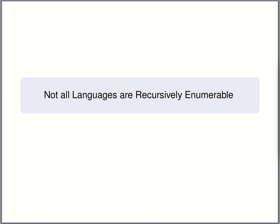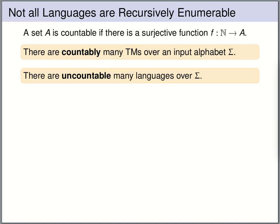Turing machines are as powerful as it gets, so it is natural to ask whether every language can be computed by a Turing machine. The answer is no — there are languages that are not recursively enumerable and cannot be computed by any Turing machine. The main idea of the proof is that we have only countably many Turing machines over some alphabet, but we have an uncountable set of languages, so we cannot have a Turing machine for every language.